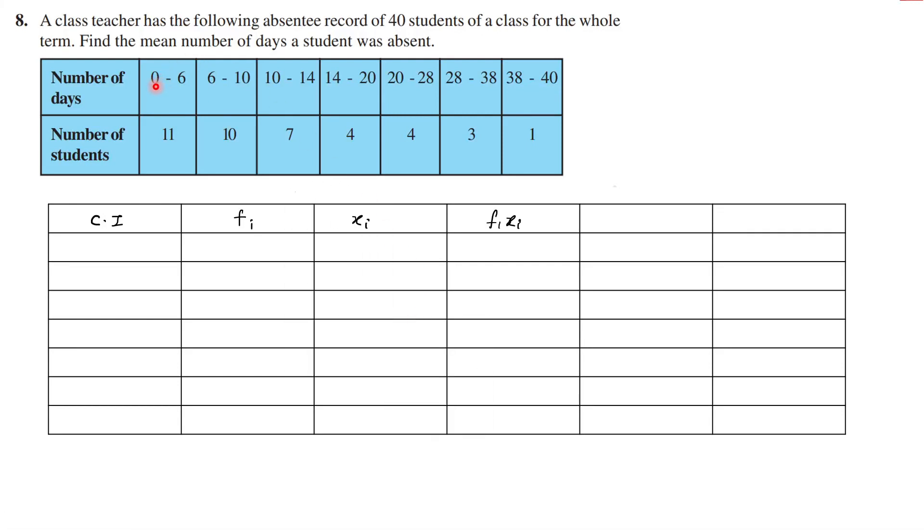Good morning everyone, welcome to Tutor Location channel. Today we'll solve question 8 from exercise 14.1 on statistics. The question states: a class teacher has the following absentee record of 40 students of a class for the whole term. Find the mean number of days a student was absent.